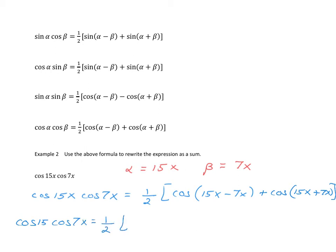It's one half of cosine of 15 minus 7, that is a positive 8x, and then cosine of 15x plus 7x is 22x. And that is how this can be simplified.